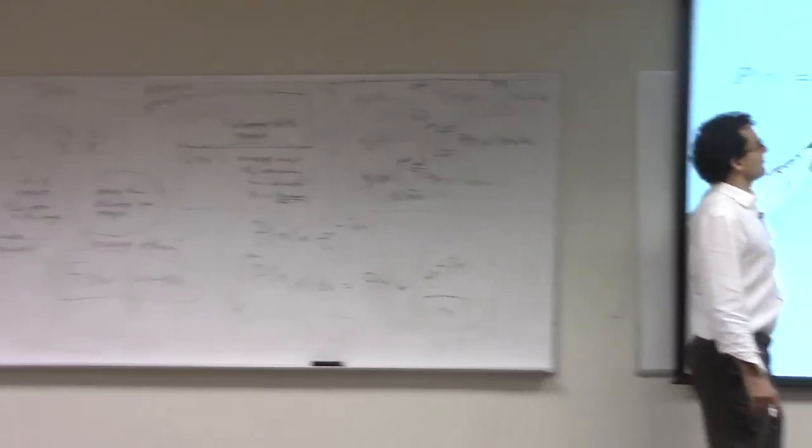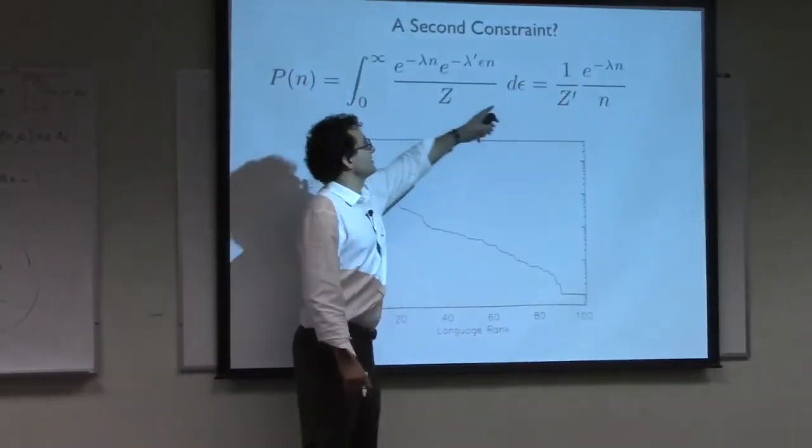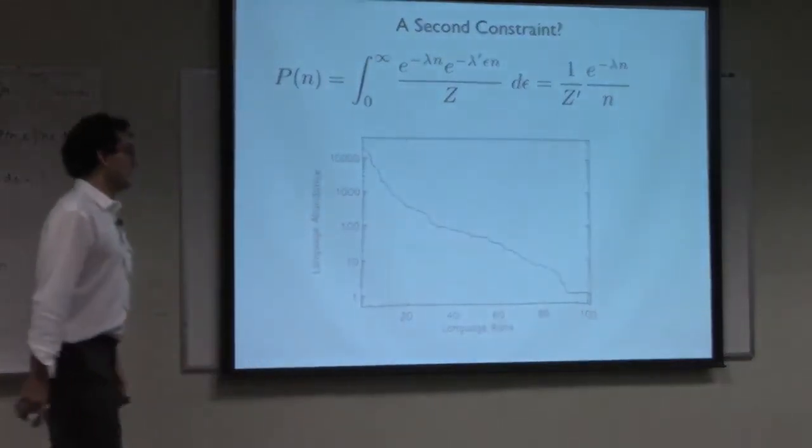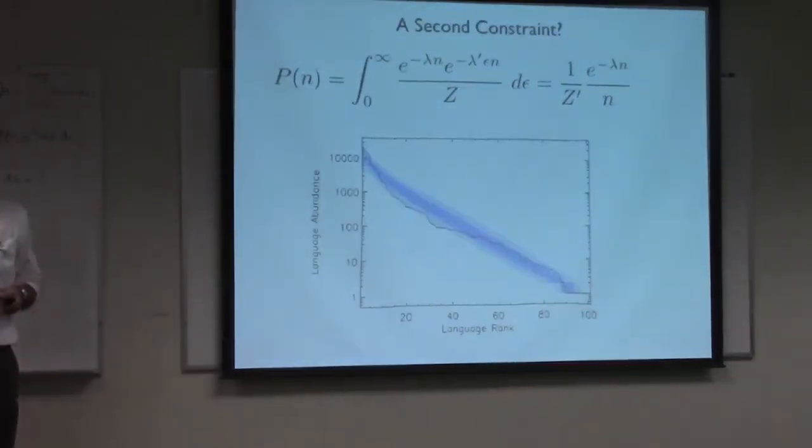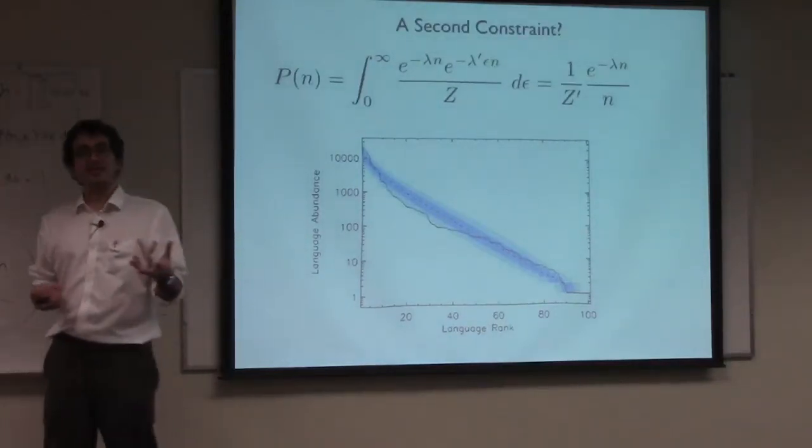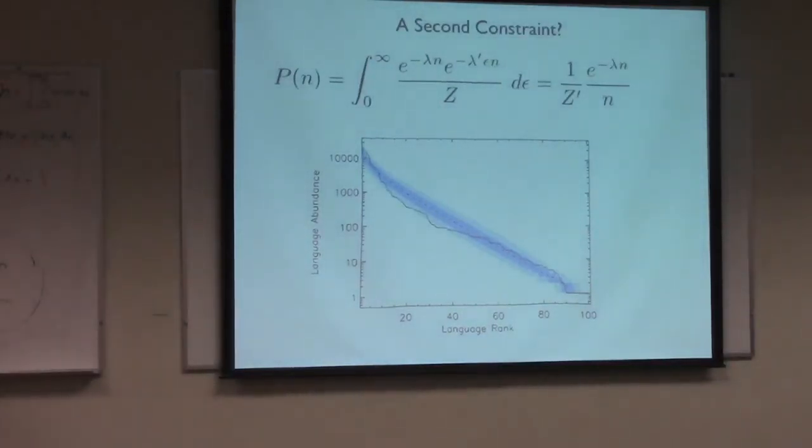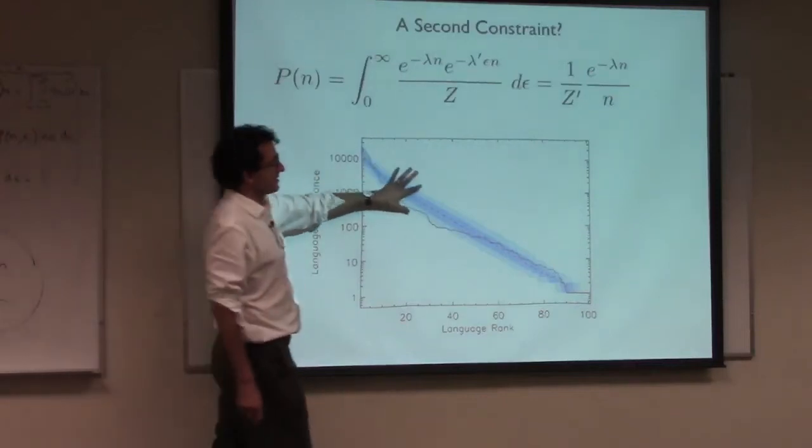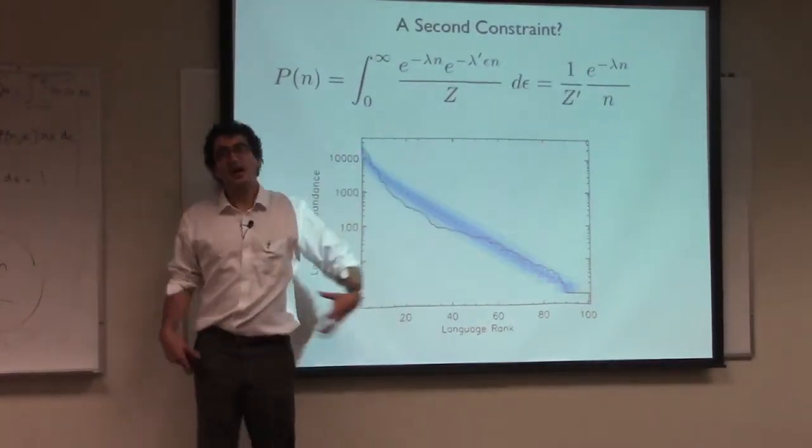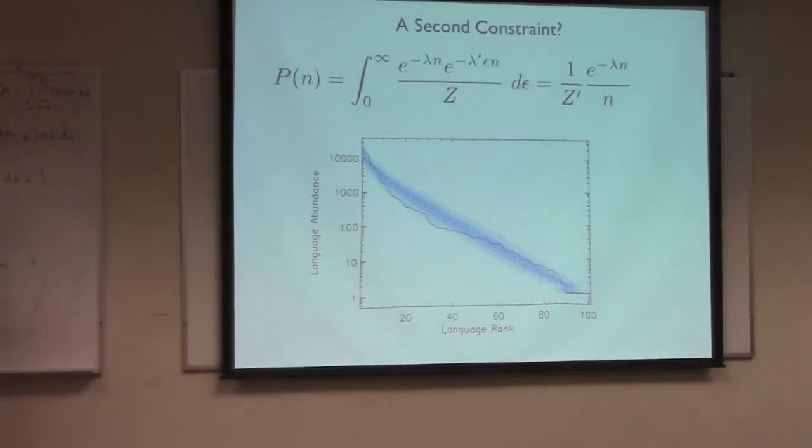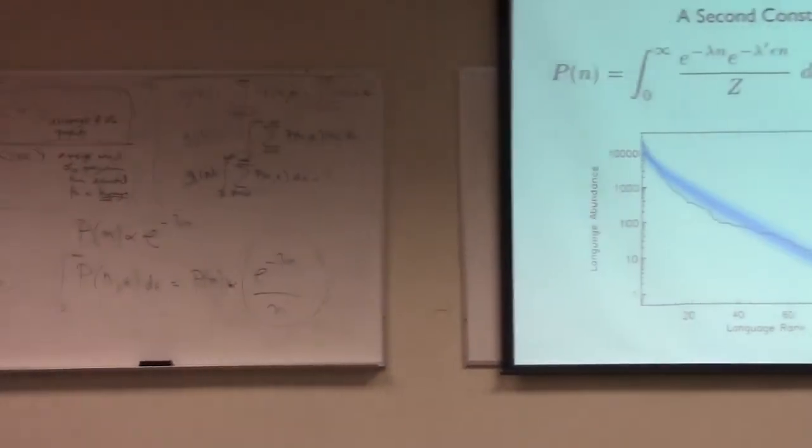So here's the functional form which we got by integrating out this hidden programmer efficiency variable. And what you can see now is that that distribution is a far better model for language popularity. And what we've done here, just to be clear, is that we've postulated this additional constraint involving a hidden variable that we can't see. And we've integrated out that hidden variable. So what you should be impressed by is the fact not only that we're able to get a good fit, but also by the underlying mechanisms that the Maxent model is suggesting to you.